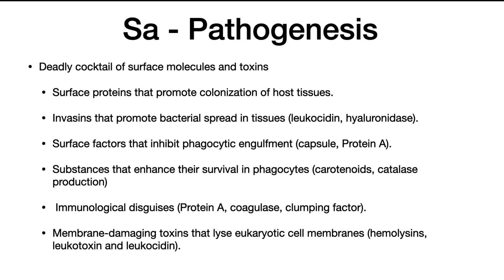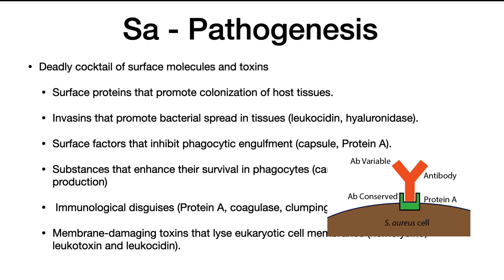Staph aureus pathogenesis: Staph aureus can form a deadly cocktail of surface molecules and toxins. Surface proteins promote the colonization of host tissues and help it bind. Invasins promote bacterial species spread in tissues. Hyaluronidase dissolves the cementing compound between cells, allowing intercellular spread. Surface factors inhibit phagocytic engulfment — for example, capsules shield surface structures to which phagocytes can bind. Also, protein A binds the conserved structures of antibodies, causing them to attach in reverse orientation and preventing the signaling of other immune responses, effectively nullifying antibody attack.